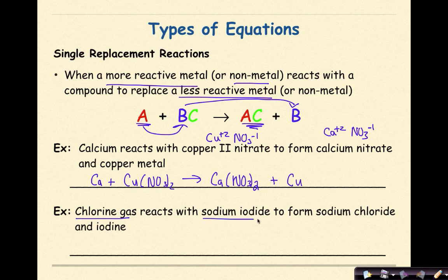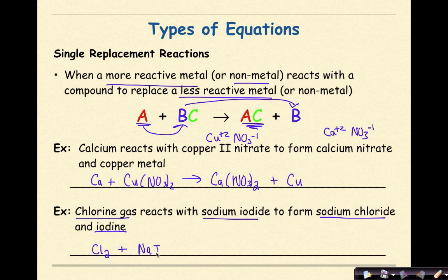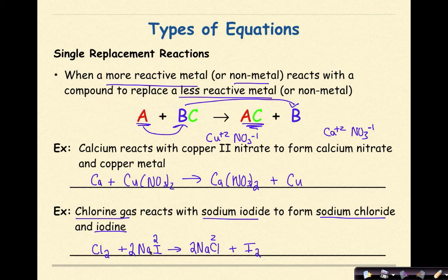Chlorine gas reacts with sodium iodide to form sodium chloride and iodine. Chlorine gas is the diatomic Cl2. Sodium iodide: Na plus 1, I minus 1 gives NaI. Sodium chloride is NaCl. Iodine is I2. Balancing: 2 chlorines here, so put a 2 in front of NaCl — 2 Cls balanced. 2 iodines here, so put a 2 in front of NaI — 2 iodines balanced. And then 2 sodiums, 2 sodiums — balanced. A more reactive non-metal comes in and kicks out a less active non-metal.